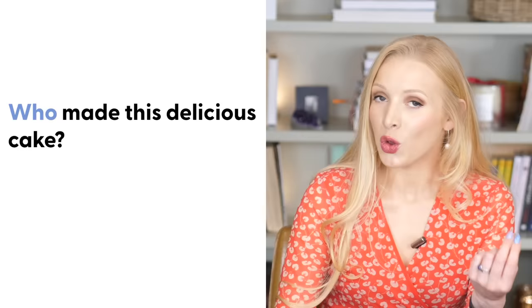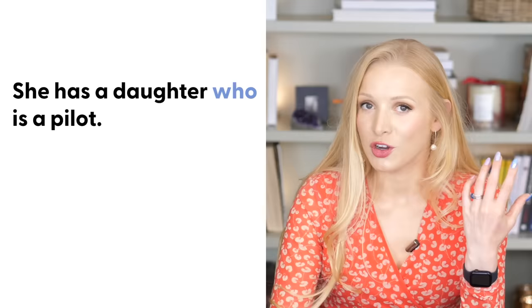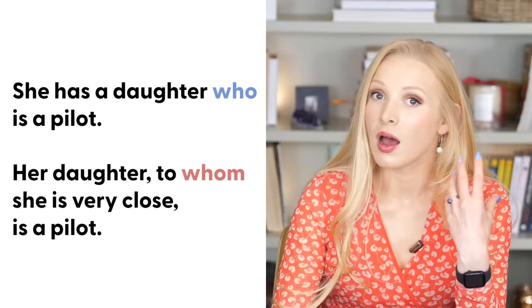Let's take a look at a few more examples of who and whom together. Who made this delicious cake? He made this delicious cake. Whom are you going to grieve with? Or: With whom are you going to grieve? I'm going to grieve with him — object pronoun. She has a daughter who is a pilot. Her daughter, to whom she is very close, is a pilot. Remember, if you want more examples and practice, download that PDF — the link is in the description box.